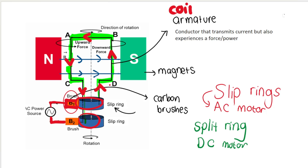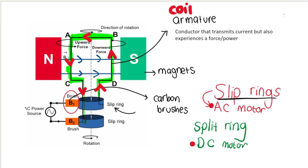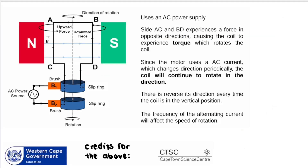You need to know the difference between an AC motor and a DC motor. On screen is an AC motor. An AC motor makes use of slip rings — there are two slip rings here. It also makes use of an AC power source, like plugging it into a wall. This symbol represents an AC power source.